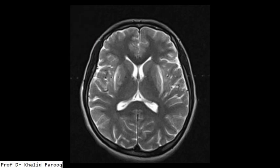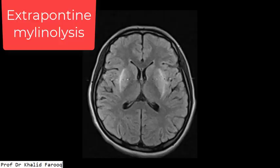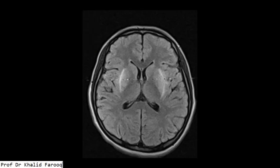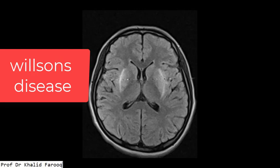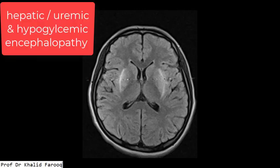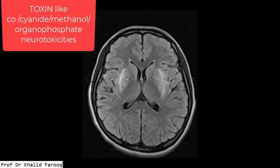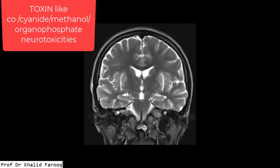Under metabolic etiology we can include extrapontine myelinolysis, Huntington's disease, and mitochondrial disease processes like Leigh's disease, Wilson's disease, hepatic encephalopathy, uremic encephalopathy, and hypoglycemic encephalopathy. Toxins like carbon monoxide neurotoxicity, cyanide neurotoxicity, and methanol neurotoxicity can also present a similar picture.